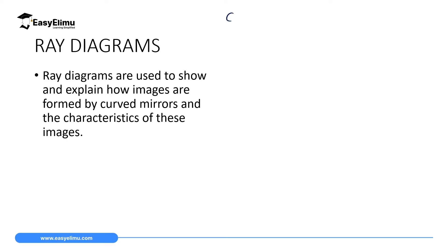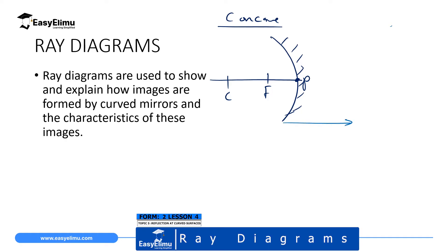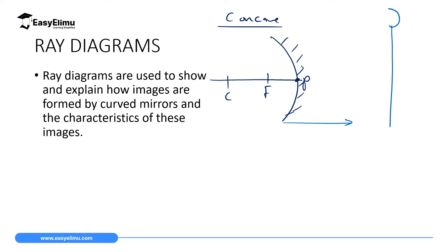For concave mirrors, we have been drawing them with the silvered back part and the principal axis. But in ray diagrams, we are going to draw a straight line with a small curve at the top — that curve represents the concave mirror. At the middle we have the principal axis with the pole, and F and C are in front of the mirror.